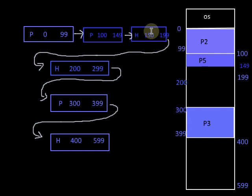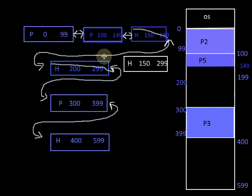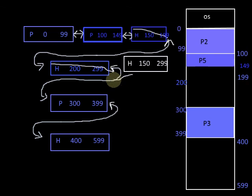A better implementation is using a doubly linked list. If we use a doubly linked list, from this node we can access the previous node and hence merge both nodes to represent a single hole. So instead of two nodes we have a single node representing a hole with starting address 150 and ending address 299.